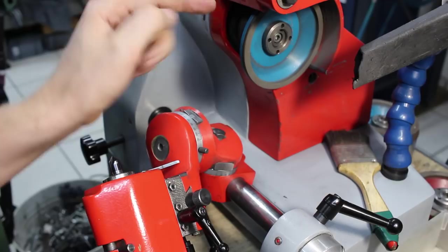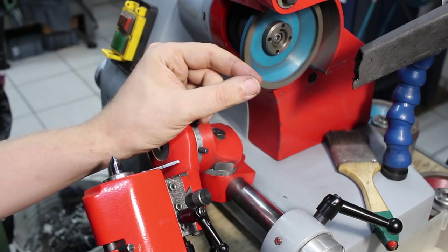The number indicates the size of the diamond grain in microns. So D125 has 125 micron large diamond grit. This is a D40, so each diamond grit on here is 40 microns in size.